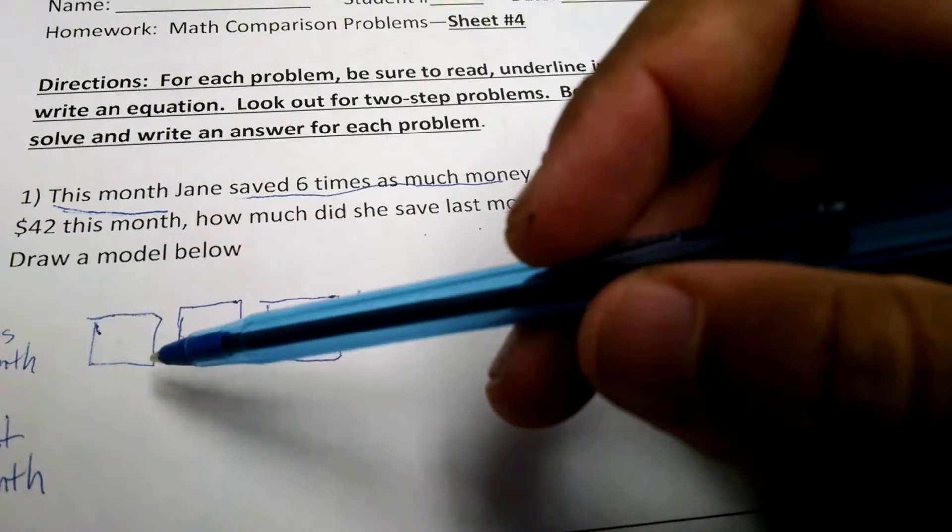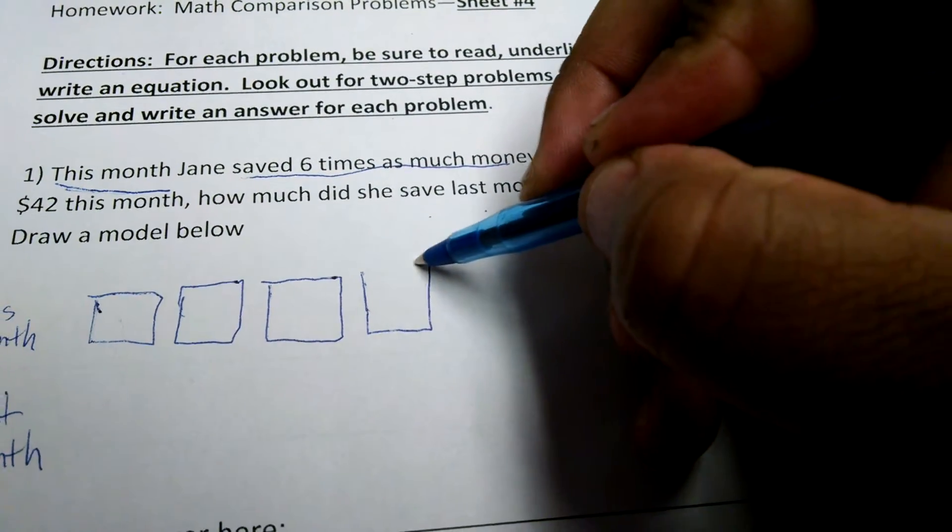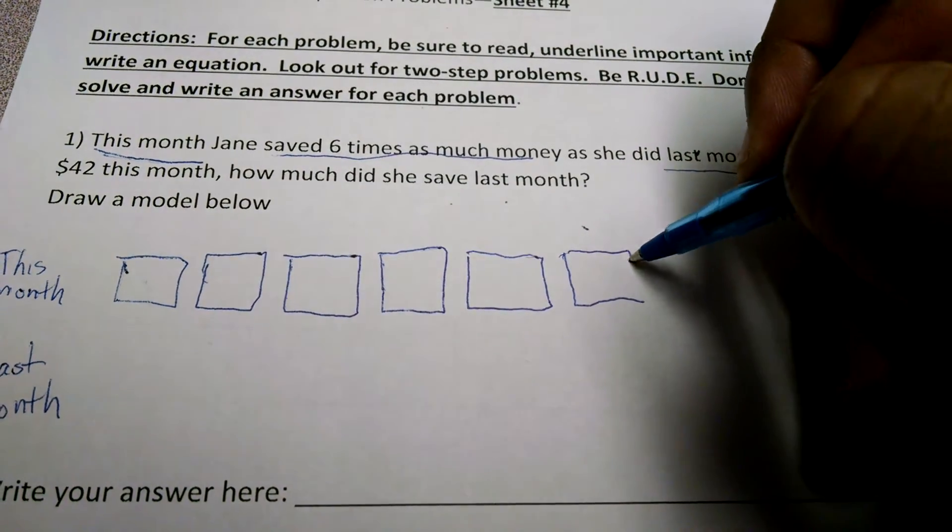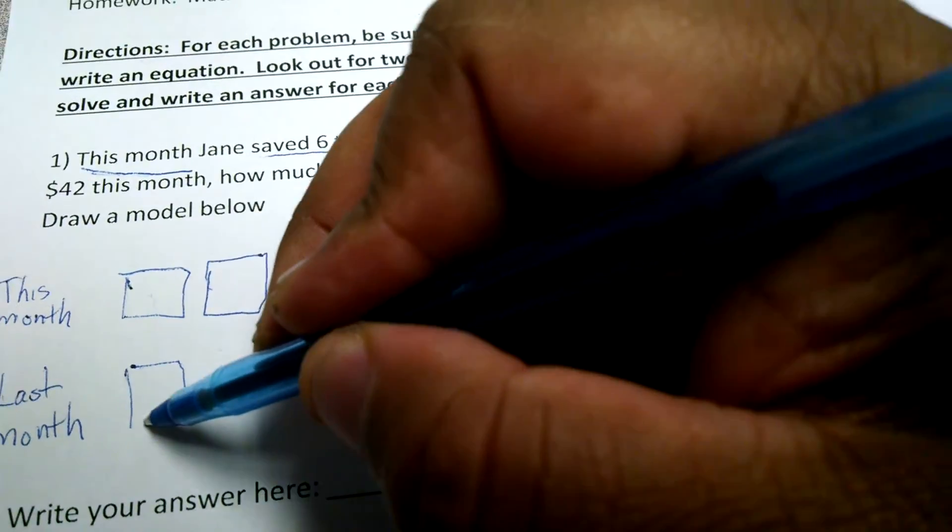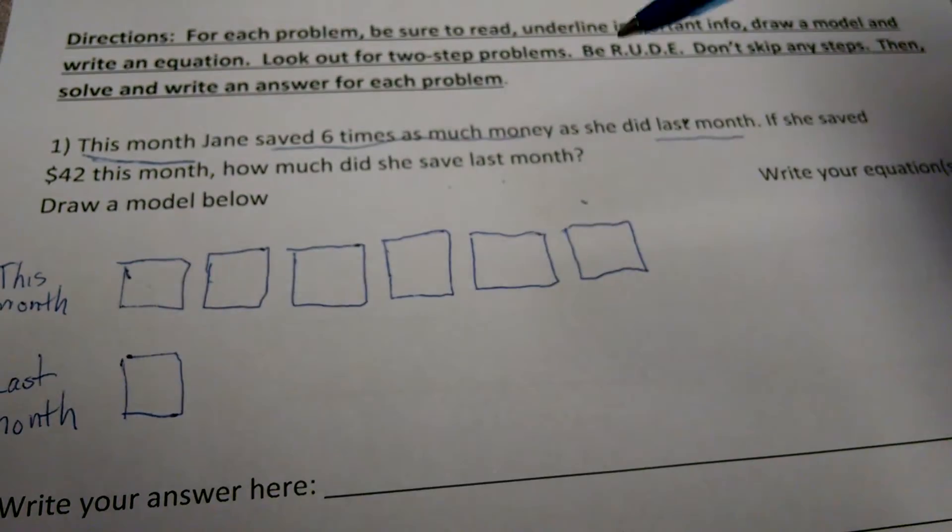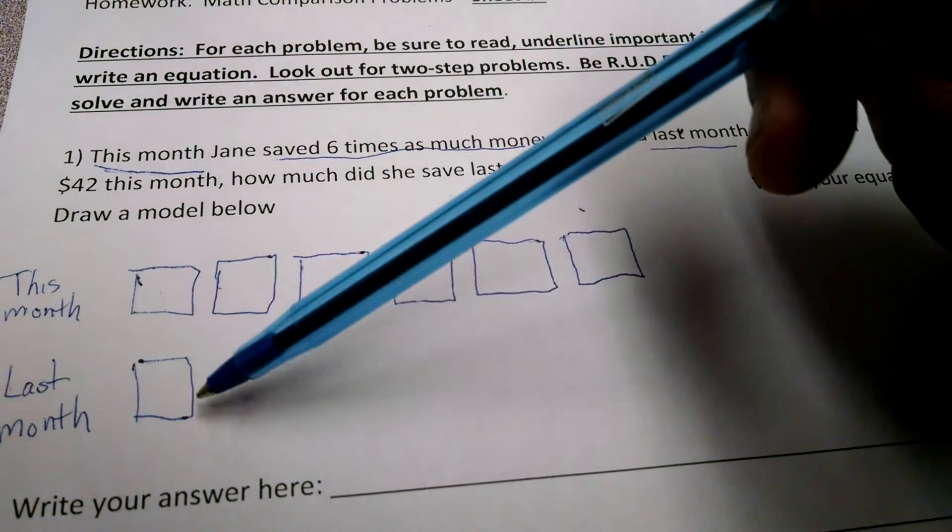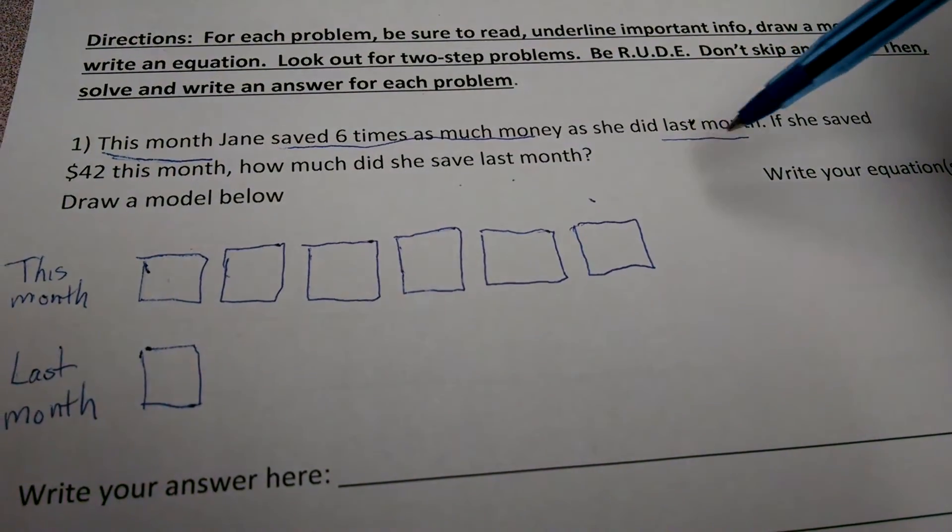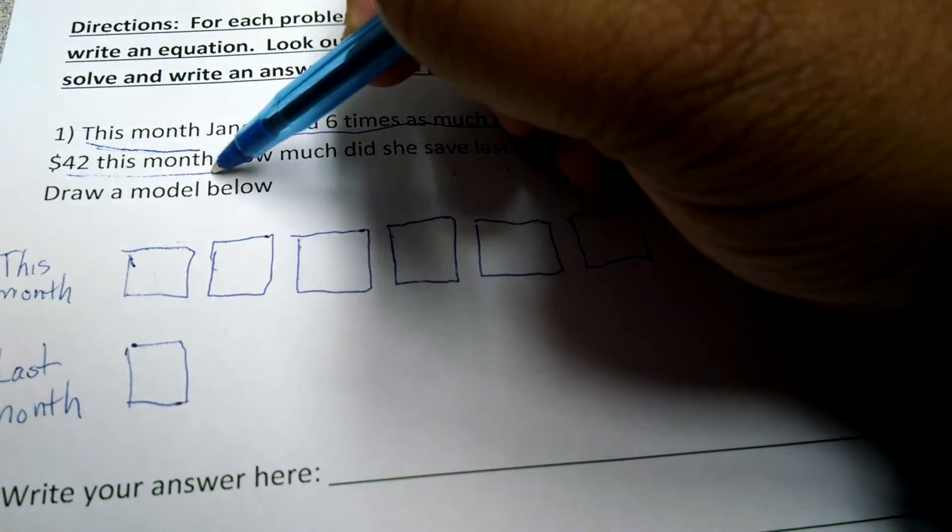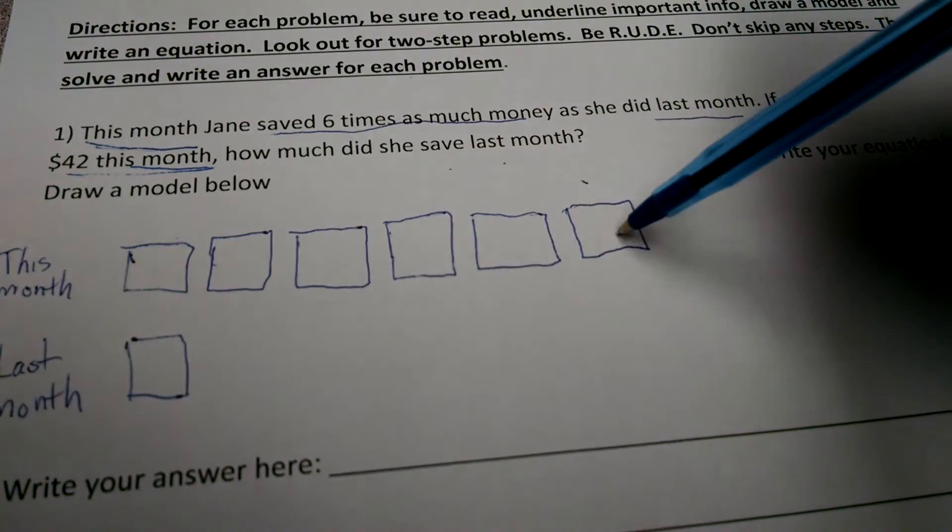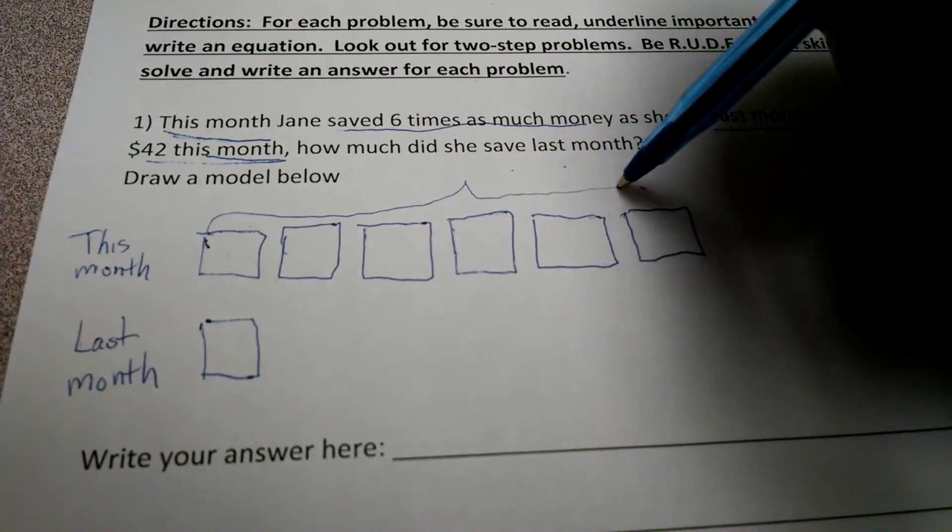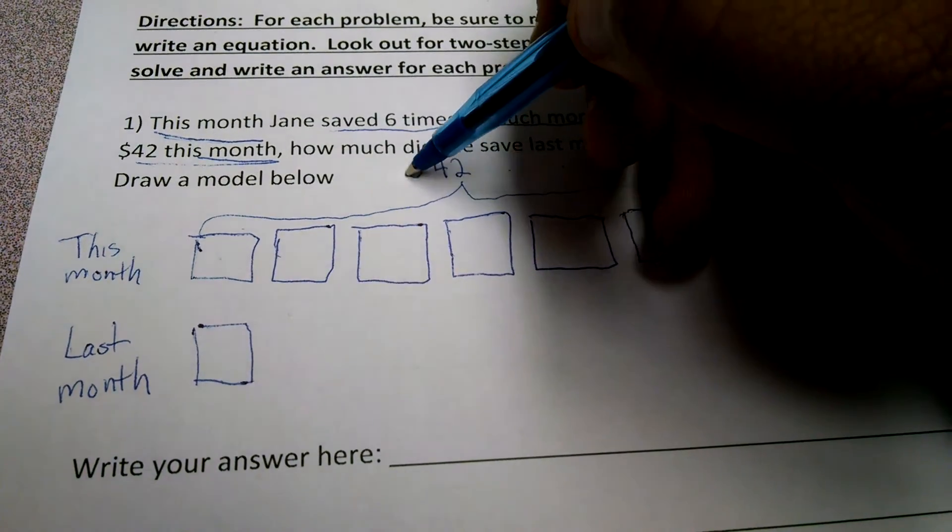And I'm going to try to draw them the same size. And I'm going to draw six of them, which represents the six times as much. So, if it said five times as much, I would draw six of them. And for last month, I'm going to represent one bar. One bar, that's the same size as this bar. So, the comparison is, this month, she saved six times as much as last month. So, there's six bars to the one bar. Now, did it say how much she saved this month? Yes. She saved $42 this month. So, that means the total quantity of all of these bars is $42. So, I'm going to draw a little bracket. I'm going to write $42. $42.